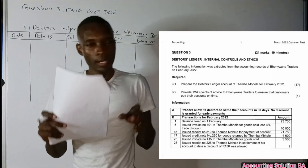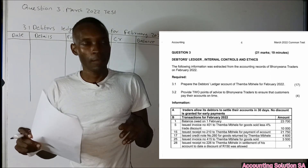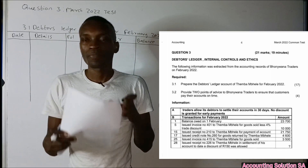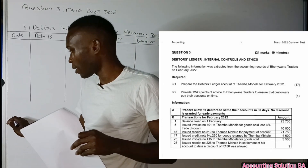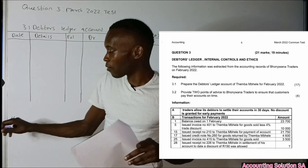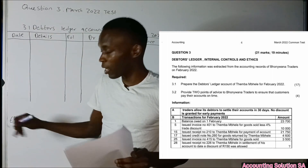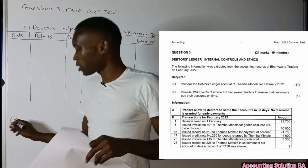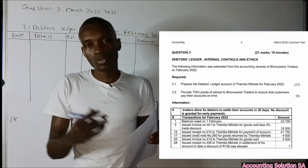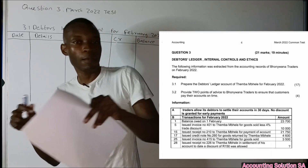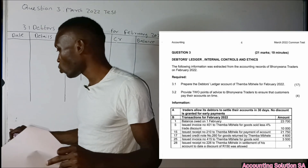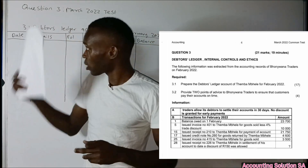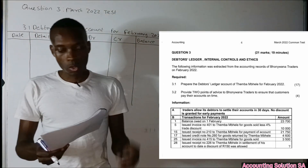A debtor's ledger is the account where we record a client who purchased from us on credit. For example, if we have a client, we open an account for them so that we can record everything — when they take inventory from us, when they pay a certain amount, and what balance they still owe. That way we know whether this client is still owing us or has already paid their debt. That is what the debtor's ledger account is all about.